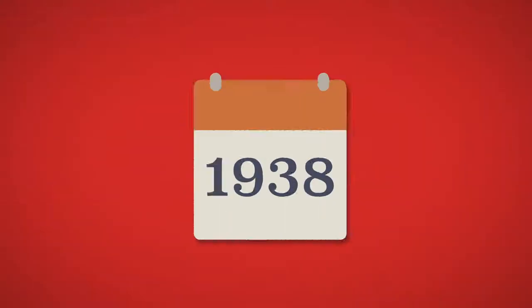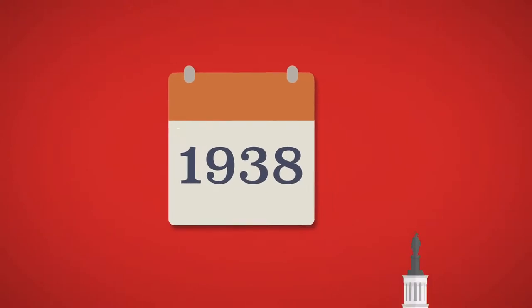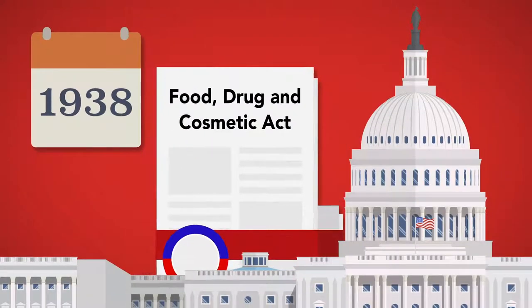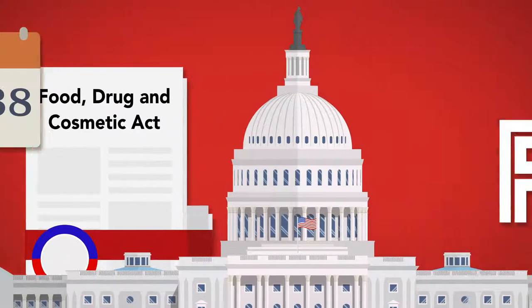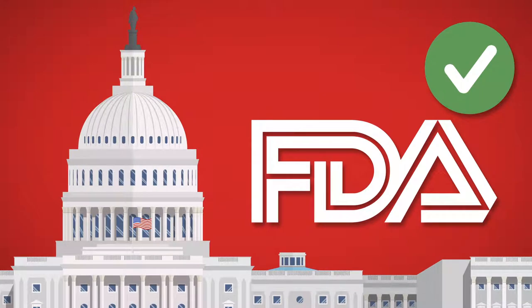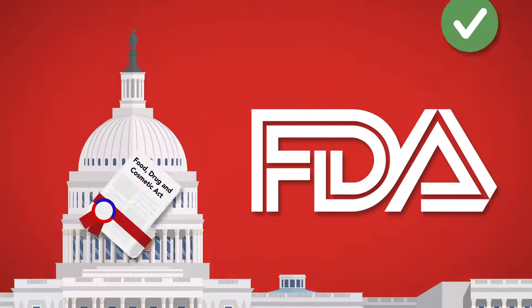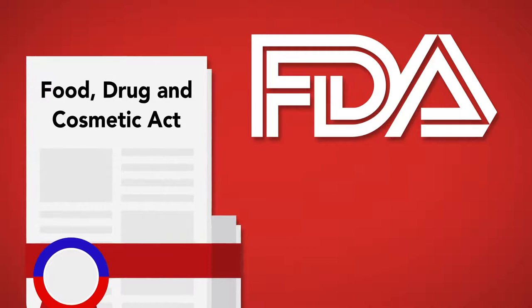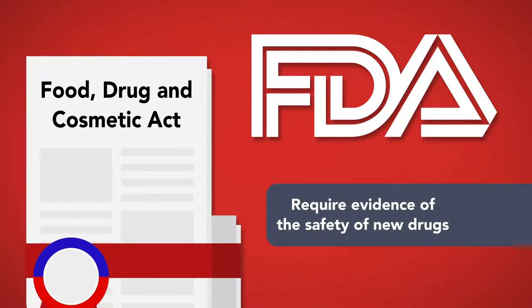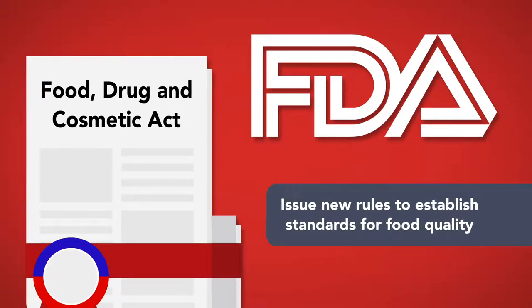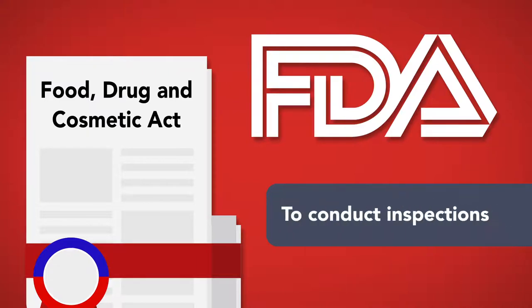For example, in 1938, Congress passed the Federal Food, Drug, and Cosmetic Act, which authorized the Food and Drug Administration — a federal agency — to enforce the terms of the Act. Among other things, the Act authorized the FDA to require evidence of the safety of new drugs, to issue new rules to establish standards for food quality, and to conduct inspections in furtherance of these charges.